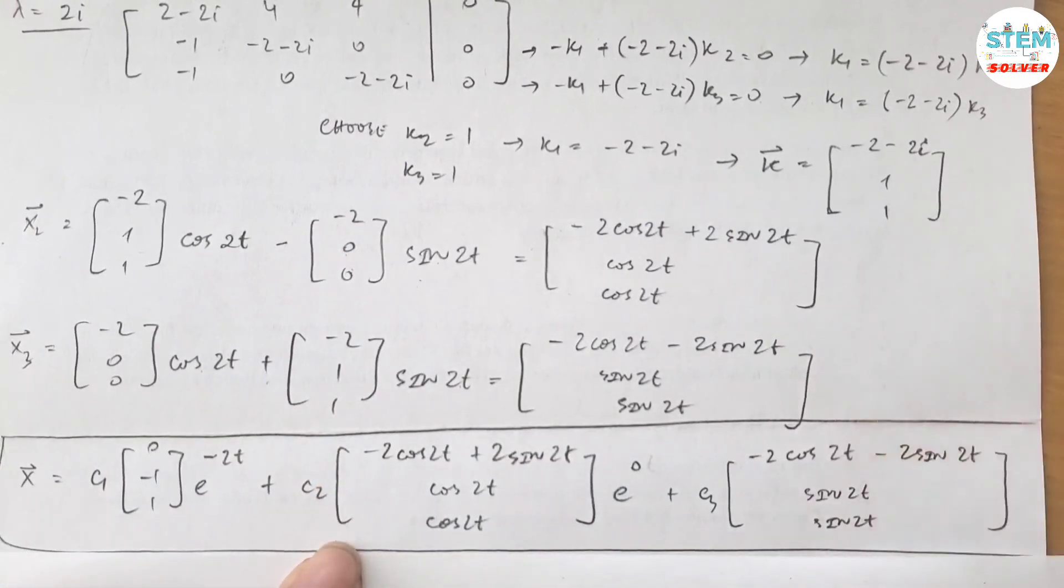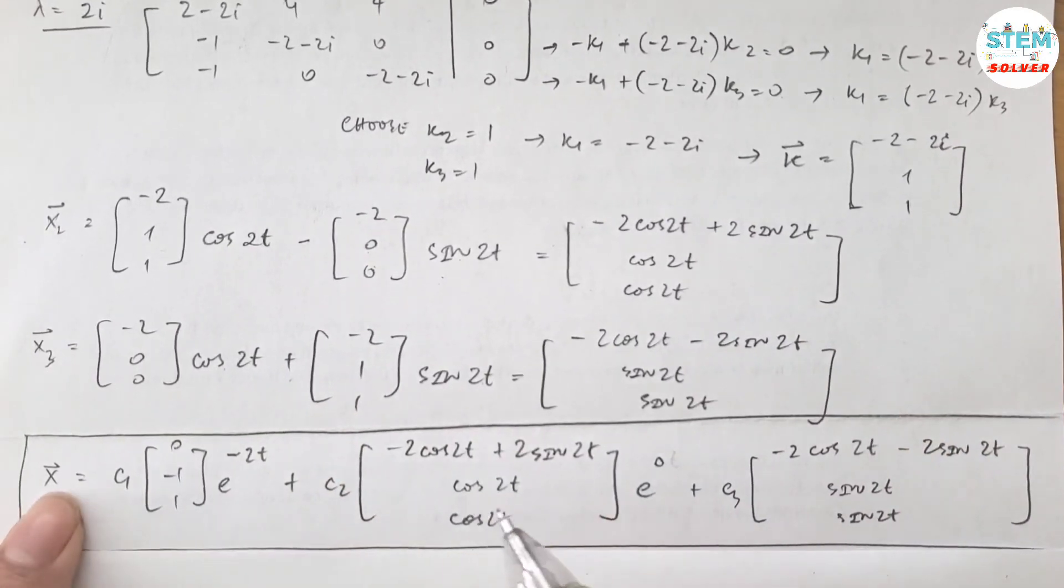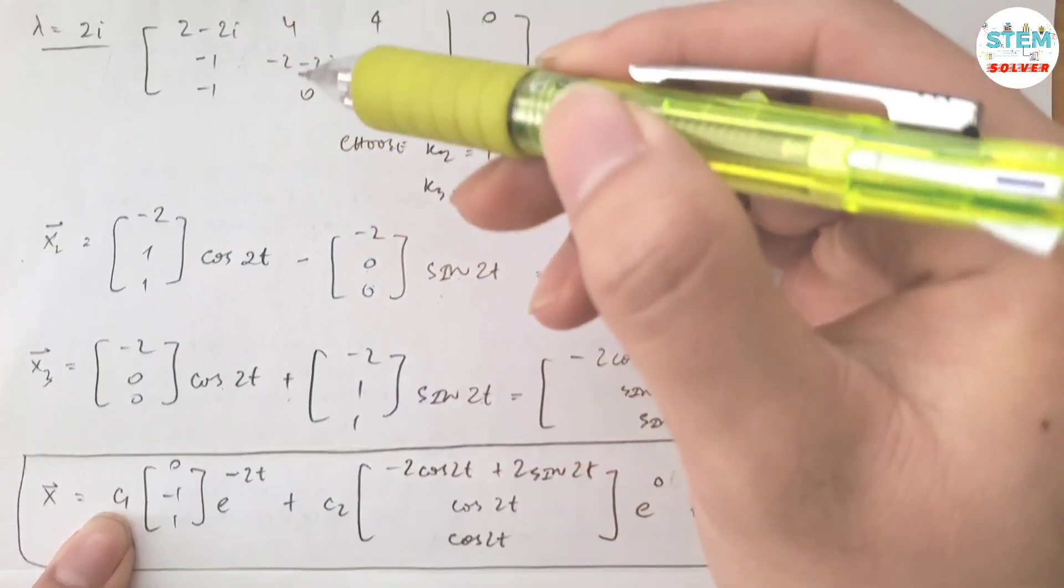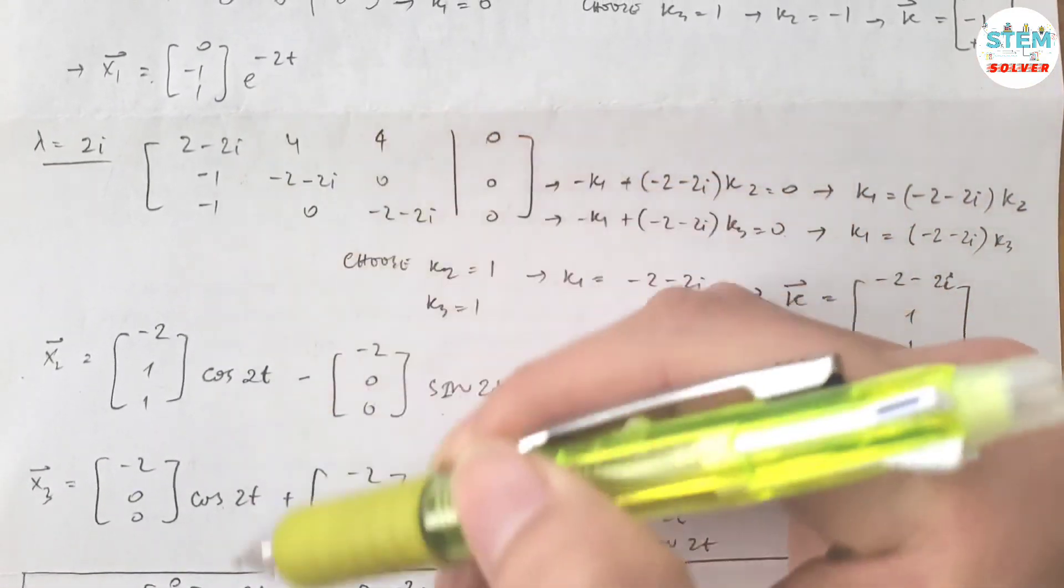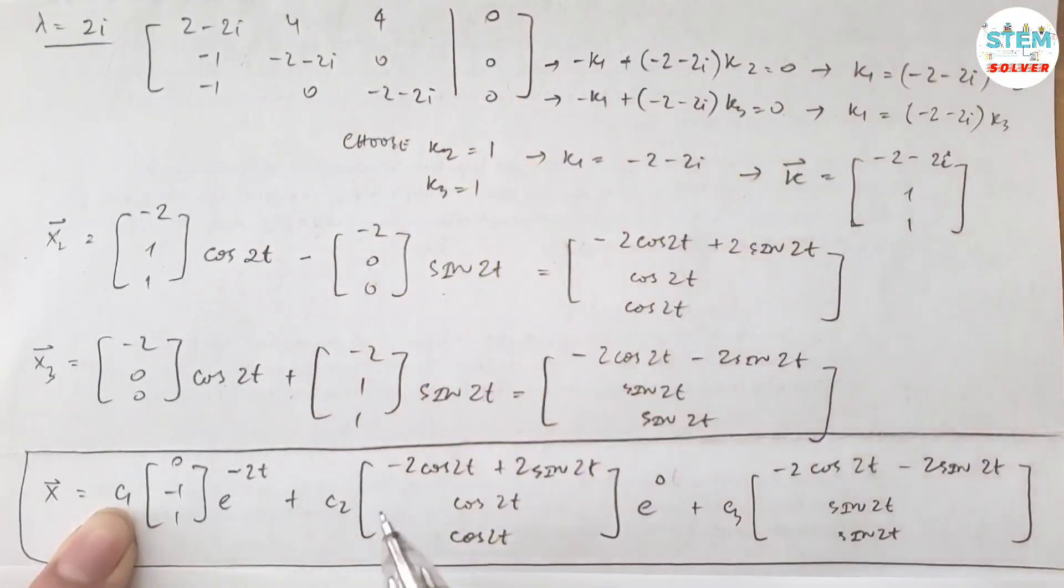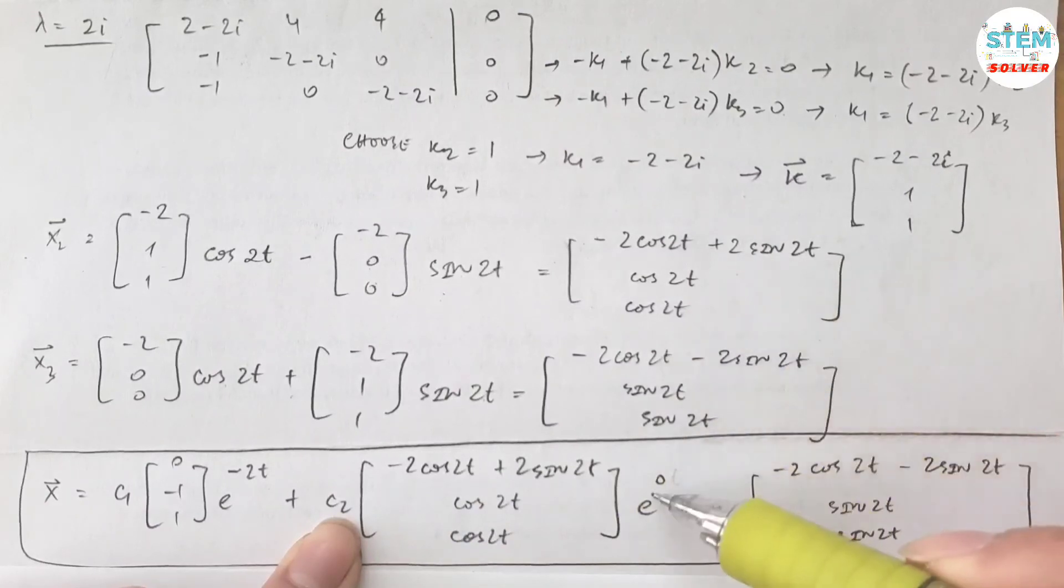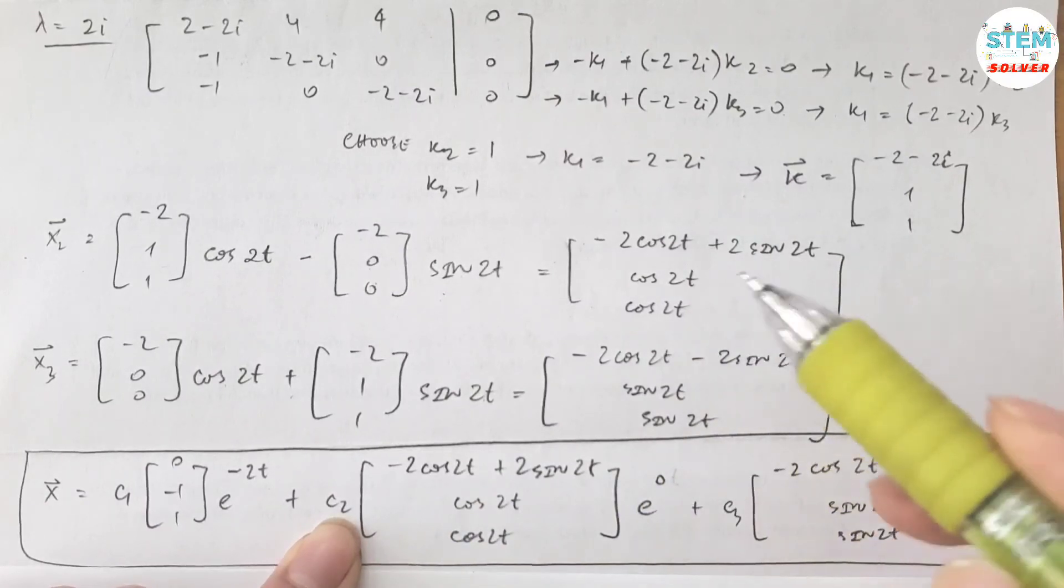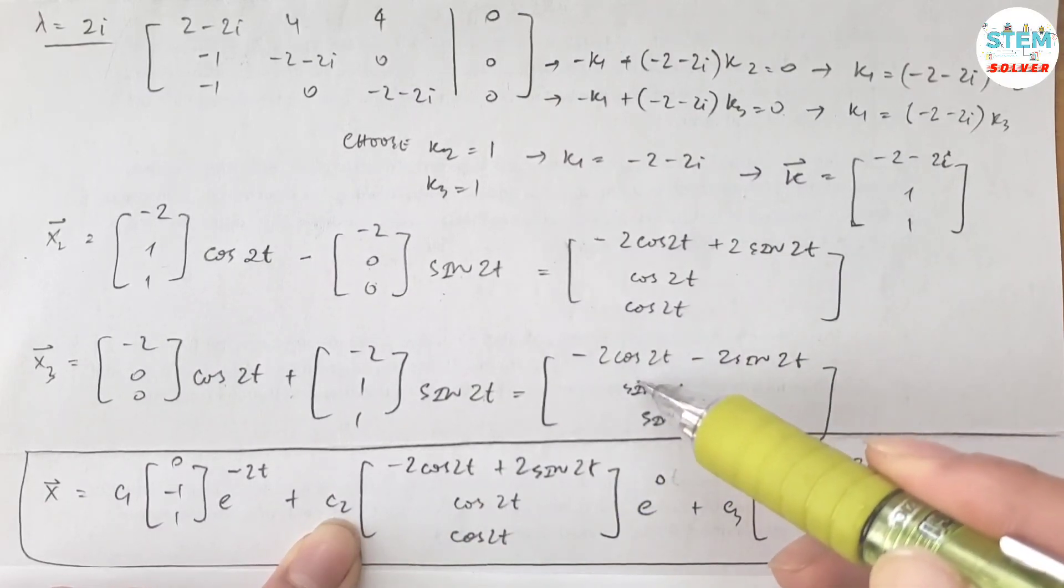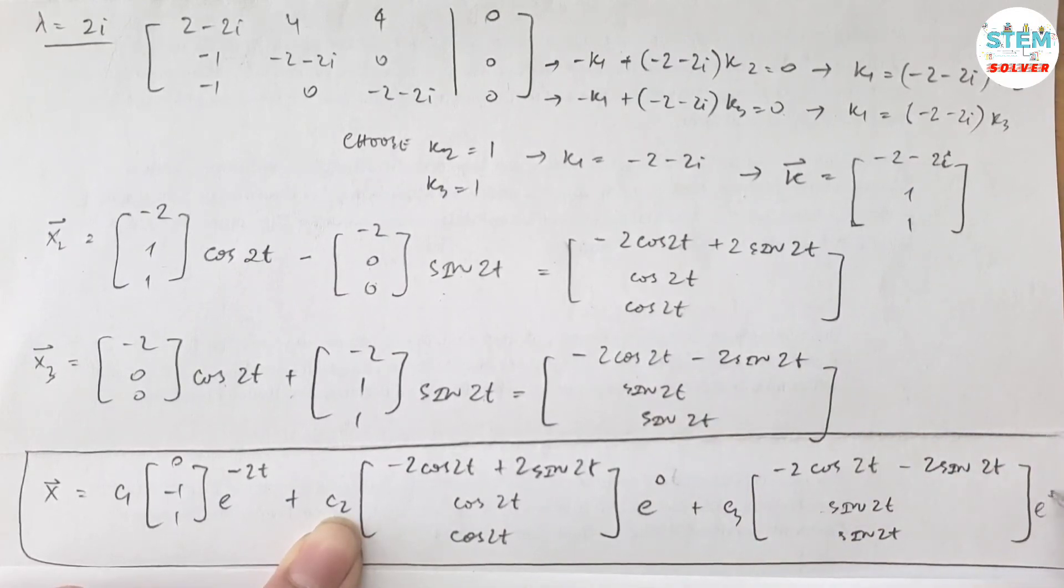Then my final answer is going to be in this form: Vector x equals c1 times vector x1, which is this vector. Bring this down. Plus c2 times this vector times e to the 0, which is 1. Plus c3 times this vector. Bring this down. Times e to the 0, which is 1 again. OK, that's it.